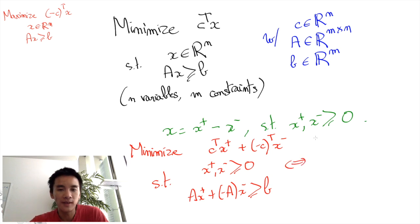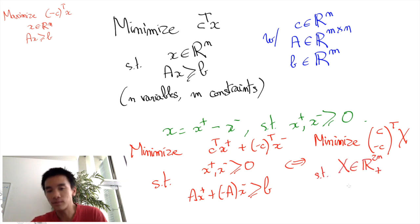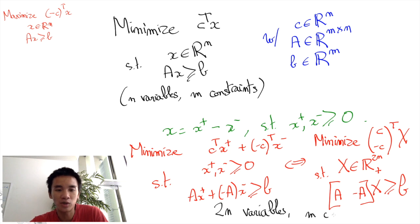We can rewrite this in a more standard manner as minimize the vector [C, -C] transpose X, where X is now a vector in R^(2n) plus, which means that all of its components are non-negative, and the constraints become the big matrix [A, -A] times X greater or equal to B. This program now has 2n variables but still has m constraints. Although some authors consider that inequalities X plus greater or equal to 0 and X minus greater or equal to 0 count as an additional 2n constraints.